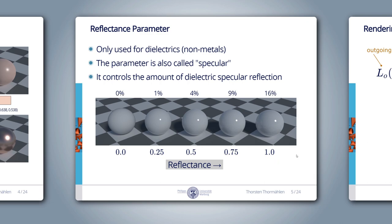These very few parameters are sufficient to control our basic microfacet BRDF. Disney's full model has several other parameters for subsurface scattering, an additional clear coat layer, and other advanced features that we are not discussing today. Now, let's dive more deeply into the theory.